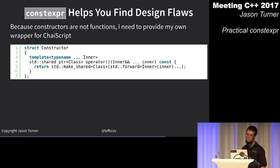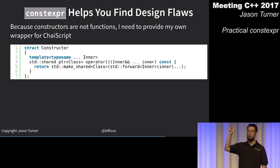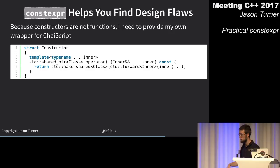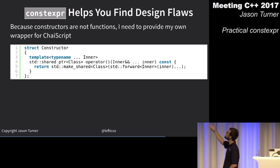One benefit discovered while applying constexpr: constructors aren't functions — you can't get a pointer to a constructor. ChaiScript needs to expose constructors to the scripting engine, so I have a function that creates a shared_ptr and returns it by forwarding parameters to the constructor.